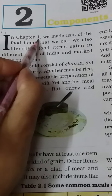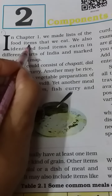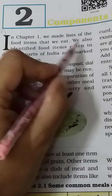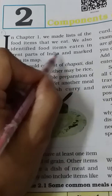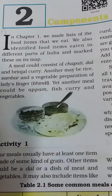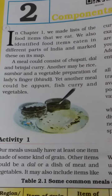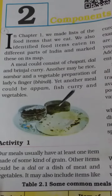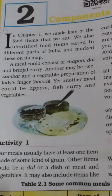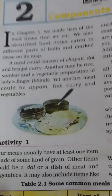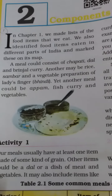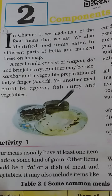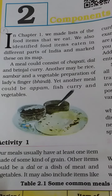In Chapter 1, we made a list of the food items that we eat. We also identified food items eaten in different parts of India and marked these on its map. So here it is saying that in Chapter 1, what we have done — we have listed all the food items in the given table, as well as discussed the food which we eat and the food eaten in different parts of the world.